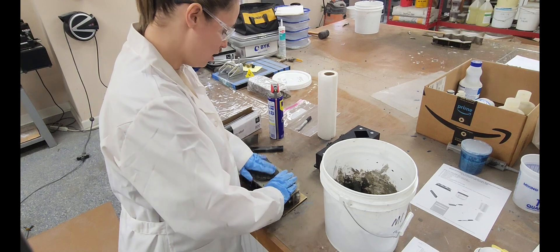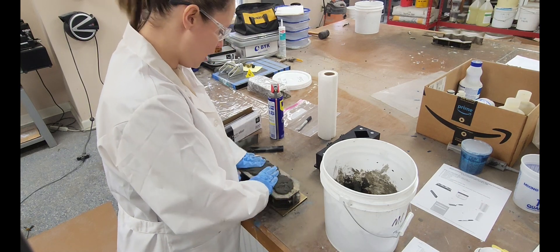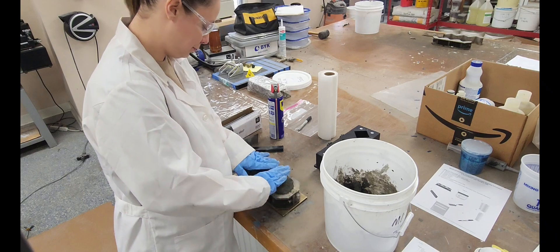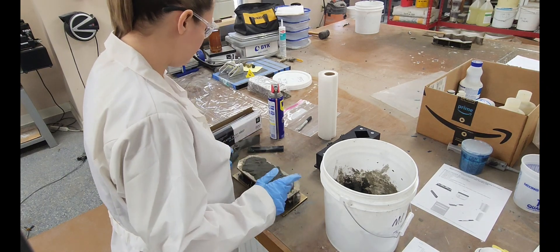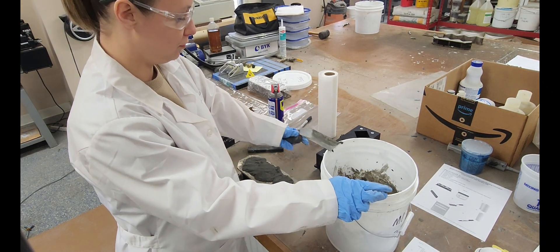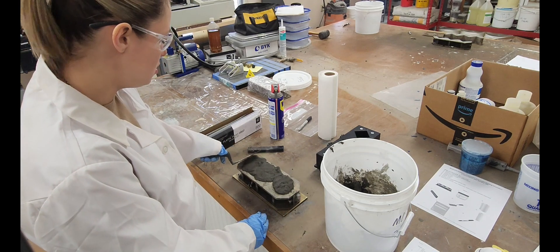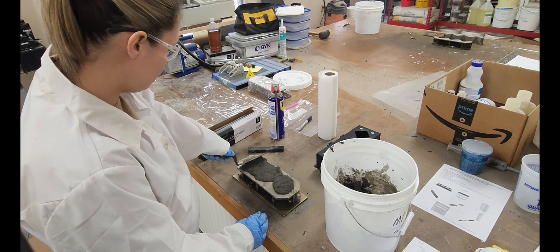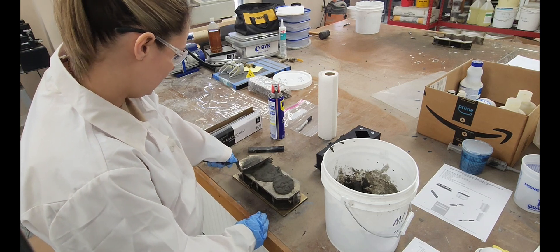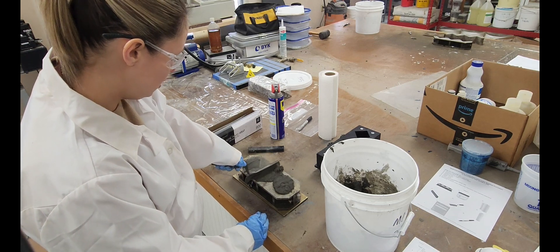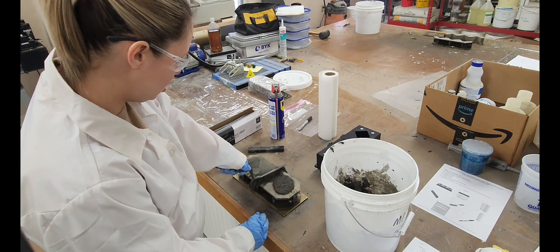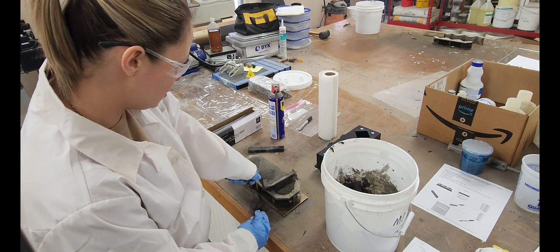For now, we're going to move on to troweling off the excess mortar on top. We take our margin trowel and we're going to hold it at about a 45 degree angle and we're going to scrape along the top of the mold. As you can see, as I'm moving my trowel over the cubes, it's pushing it up on the other side.